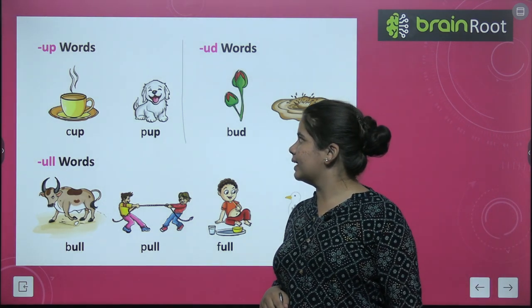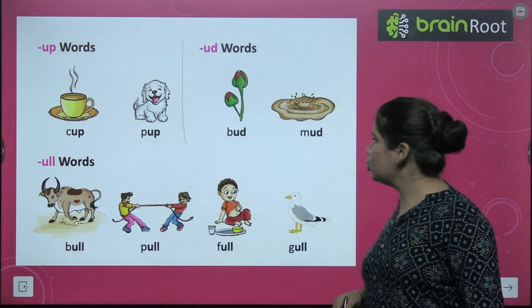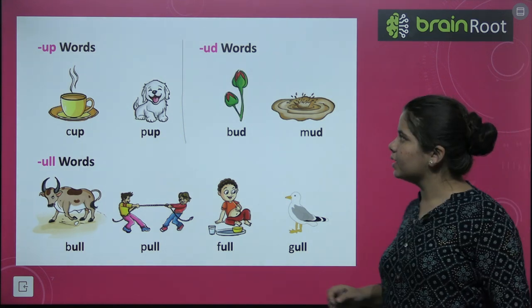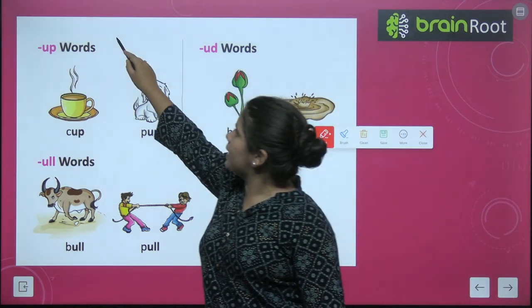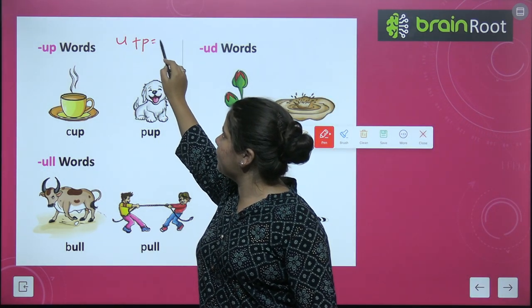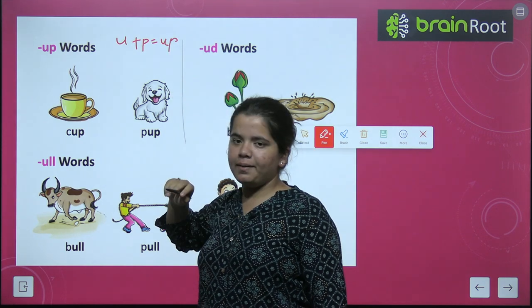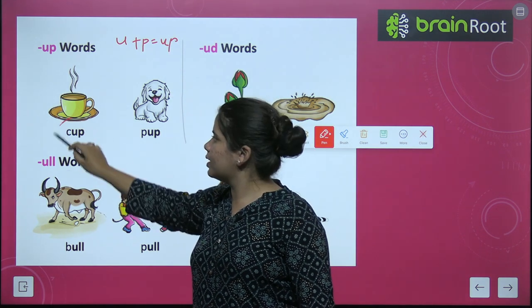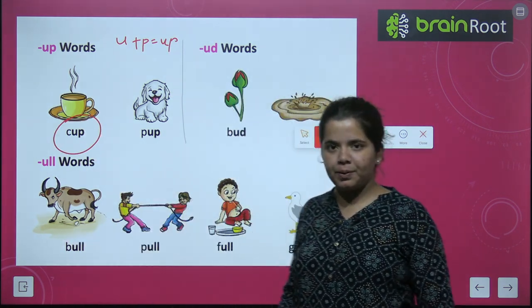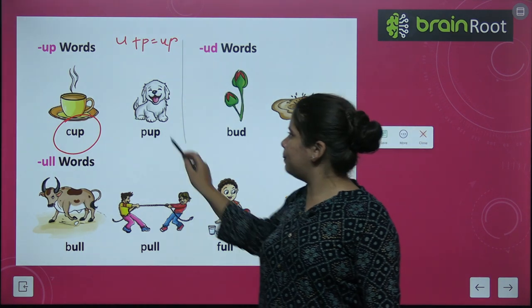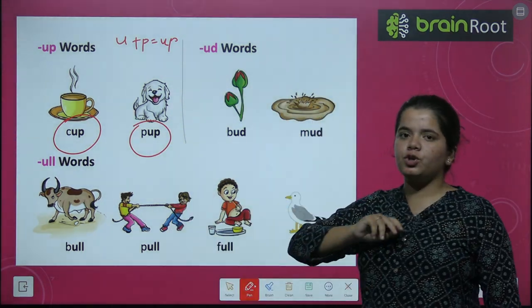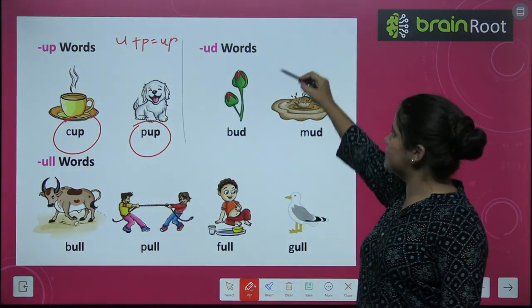Now we will read -up words — U plus P. The words are: C-U-P, cup. P-U-P, pup. Okay, so these were the -up words.